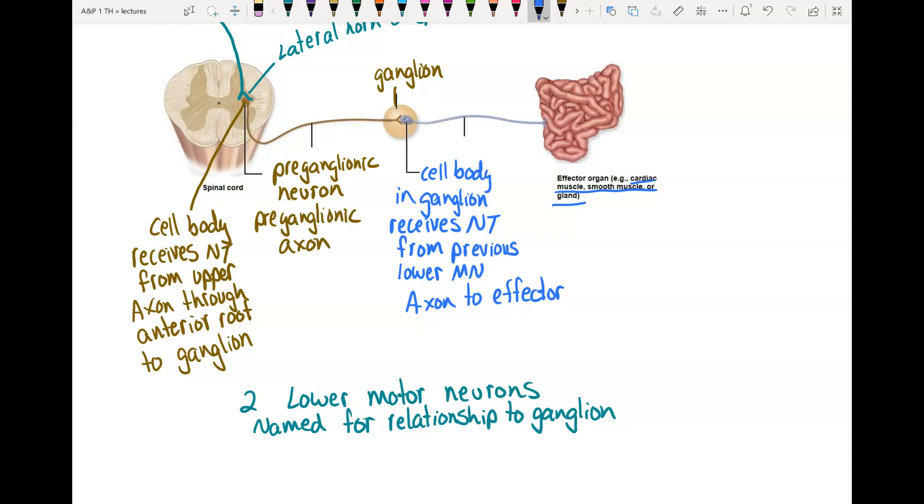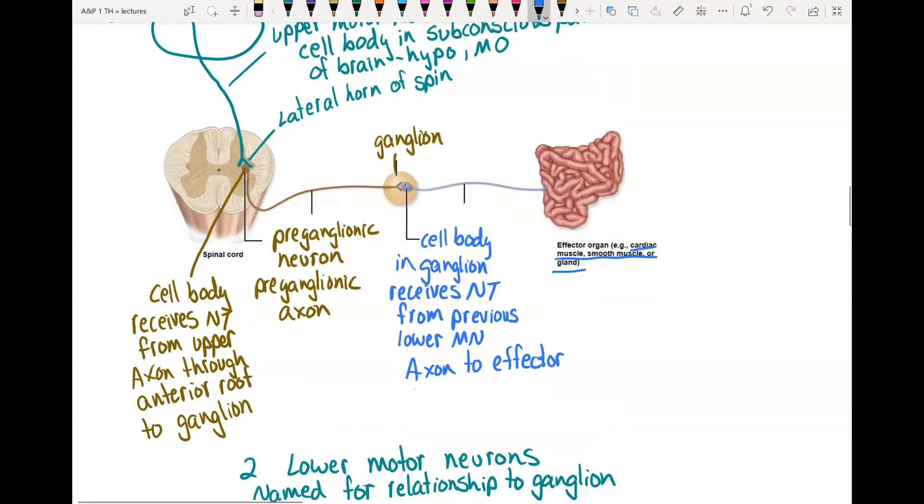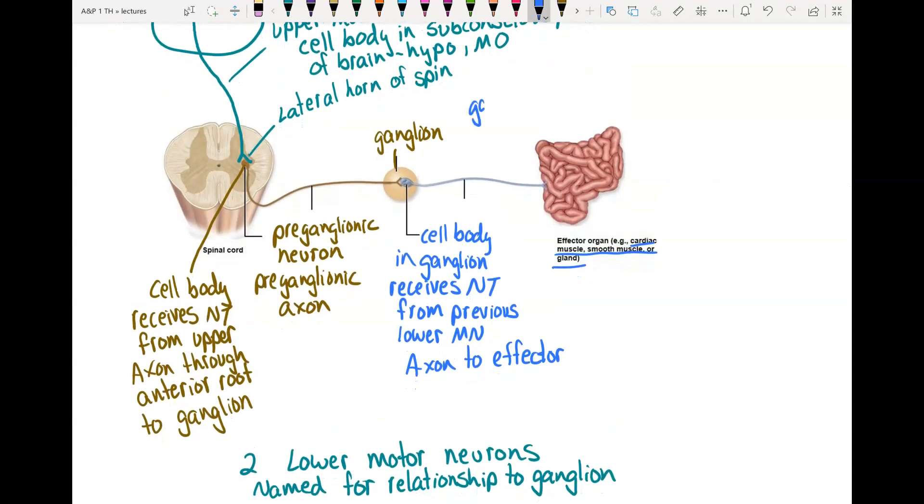The blue one has its cell body in the ganglion, so it is called the ganglionic neuron. But we don't often actually talk about a ganglionic neuron, we usually just talk about its axon. And its axon is after the ganglion, so it is called a postganglionic axon. This is the term we're going to use the most. In the remainder of the chapter, you're going to hear a lot about postganglionic axon. That's the one that goes from the ganglion to the effector and secretes neurotransmitter on the effector.